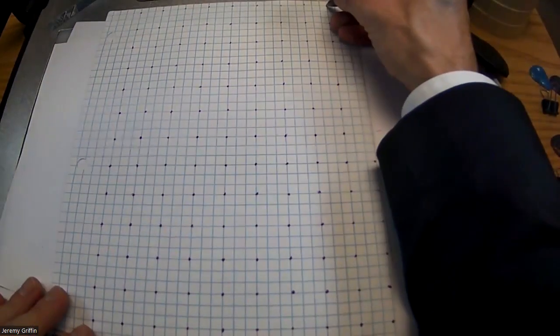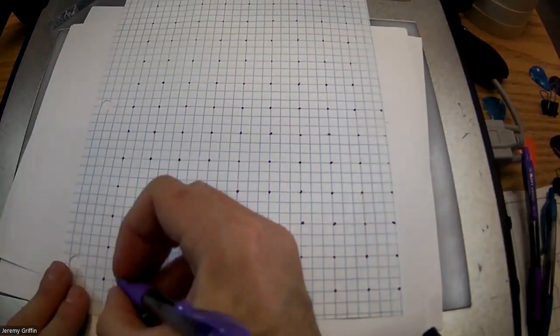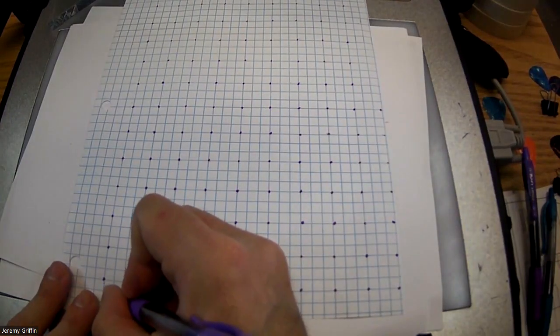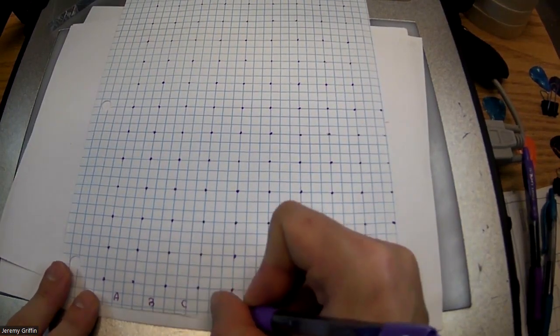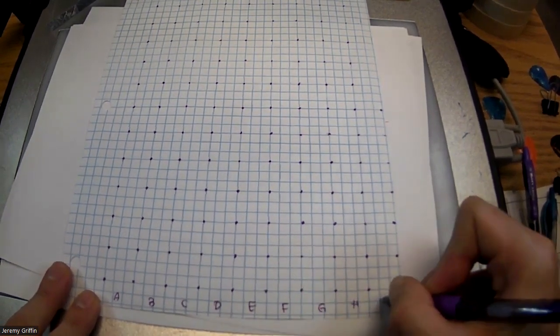So, bam, right there, we go. We go label those where it goes A, B, C, D, E, F, G, H, I.